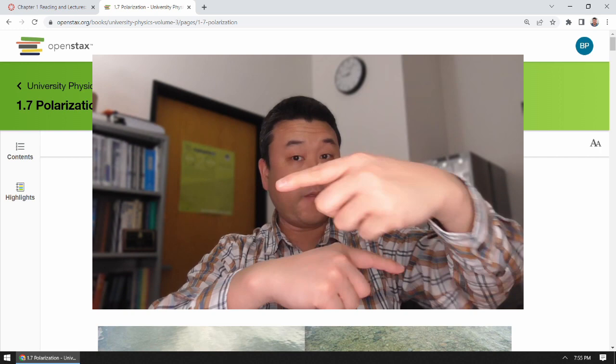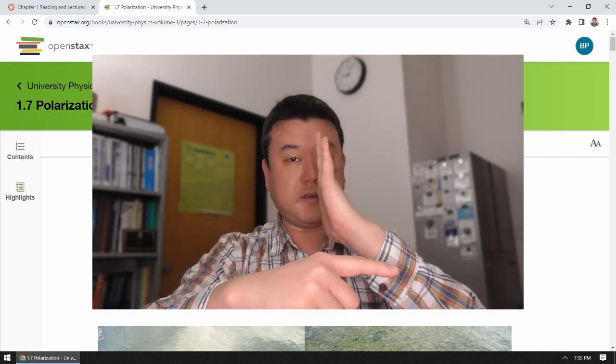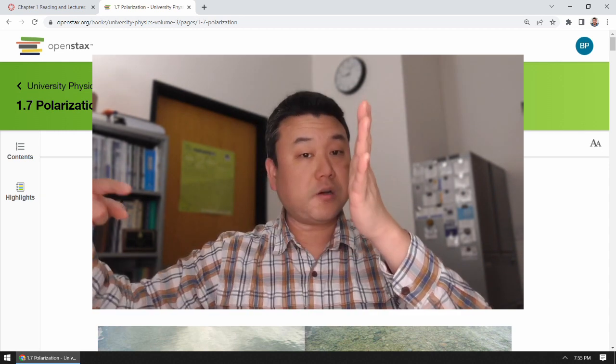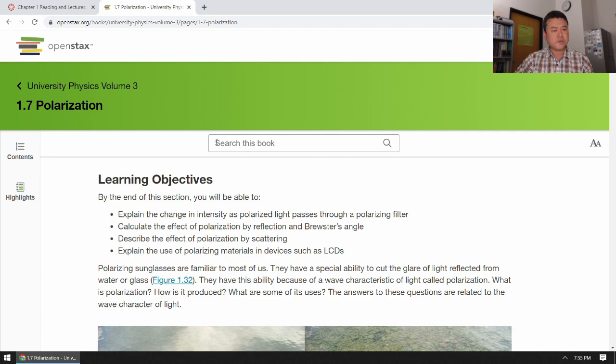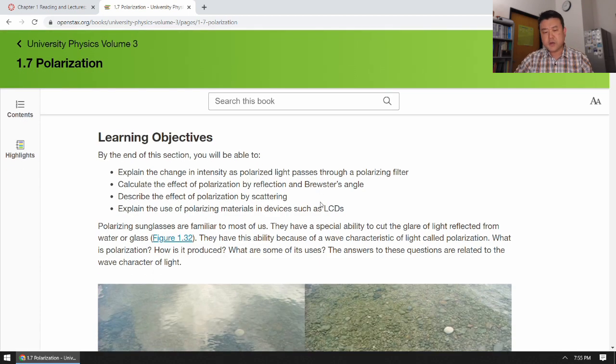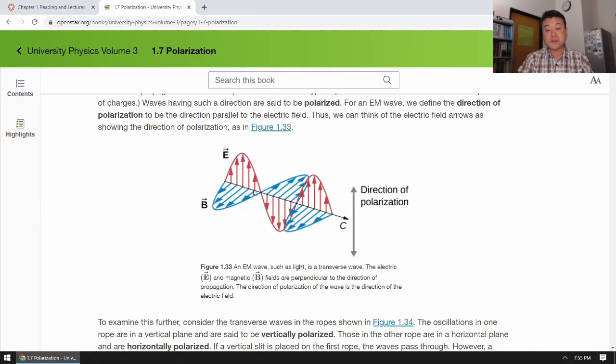So maybe up and down or front and back. So the plane in which the oscillation happens, it'll be perpendicular to the direction of propagation. And the best way to describe polarization, direction of polarization, is through the electromagnetic nature of light.